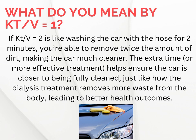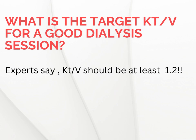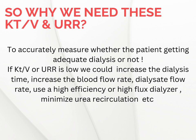What's the target KT over V — what's the magic number? Experts say KT over V should be at least 1.2. Anything less is like giving your car a half-hearted rinse — good effort, but it could be better. In KT over V, the more the merrier. So if a patient's KT over V is too low, we have options: increase dialysis time, boost blood flow, tweak dialysate flow, upgrade the dialyzer, or minimize urea recirculation. When you optimize the cleaning process, you get good results.